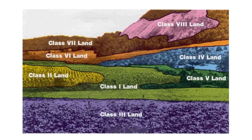This is a very good picture showing all 8 lands distributed in different levels. You can see that Class 1 land is at the lower level whereas Class 8 land is at the higher level, and the other classes are in between them.